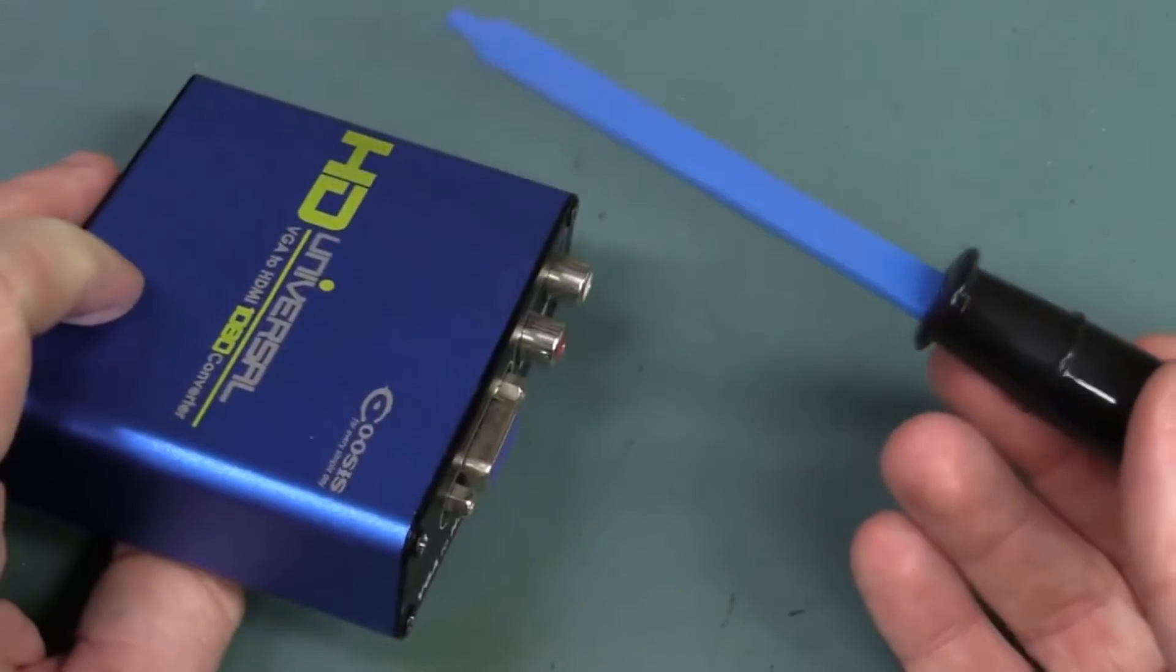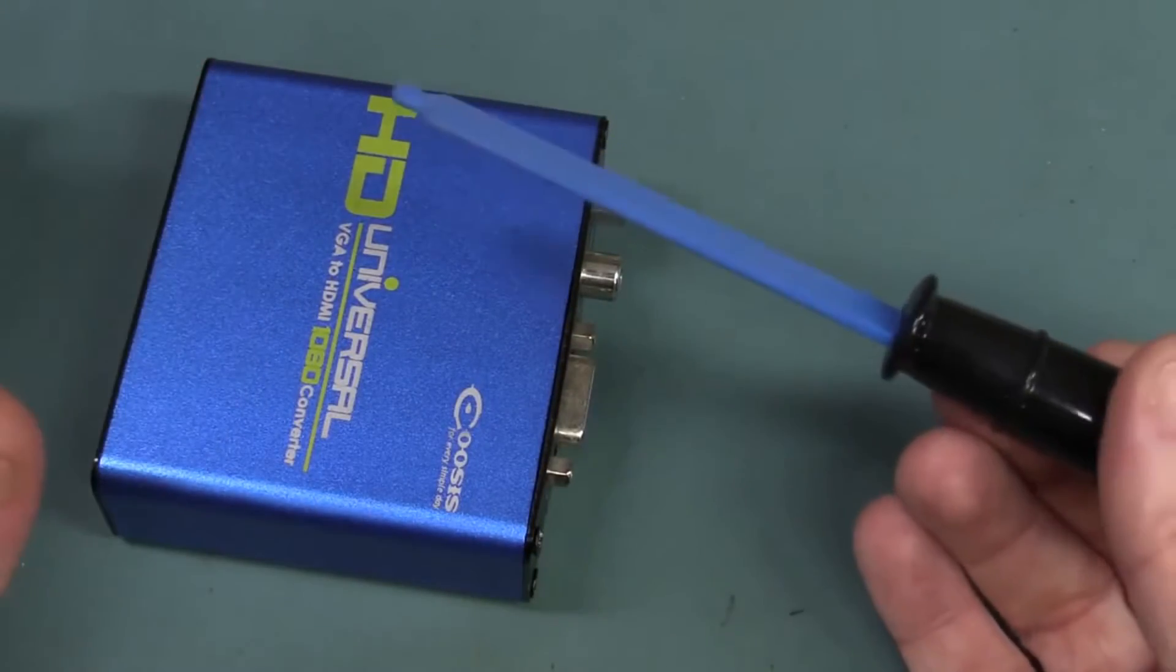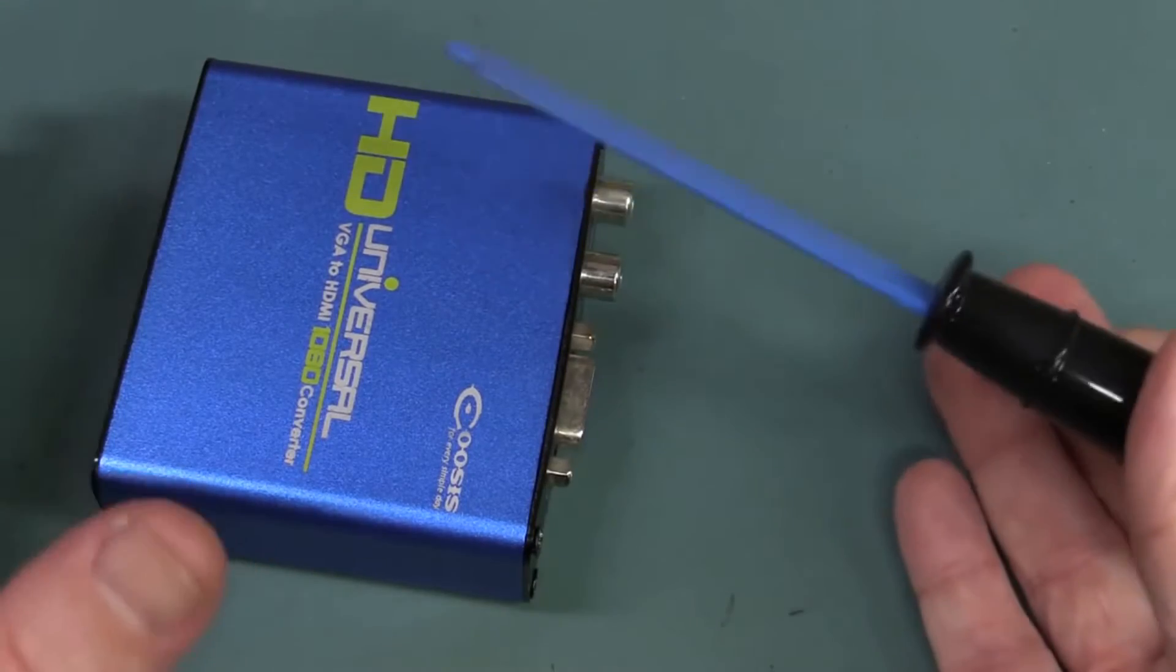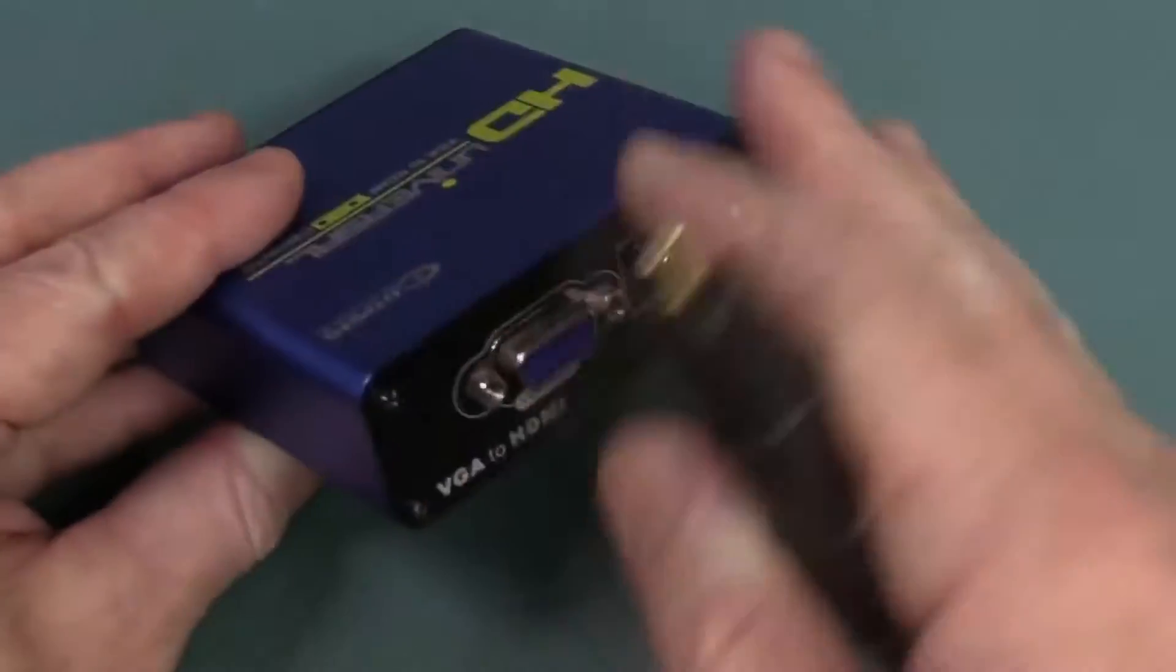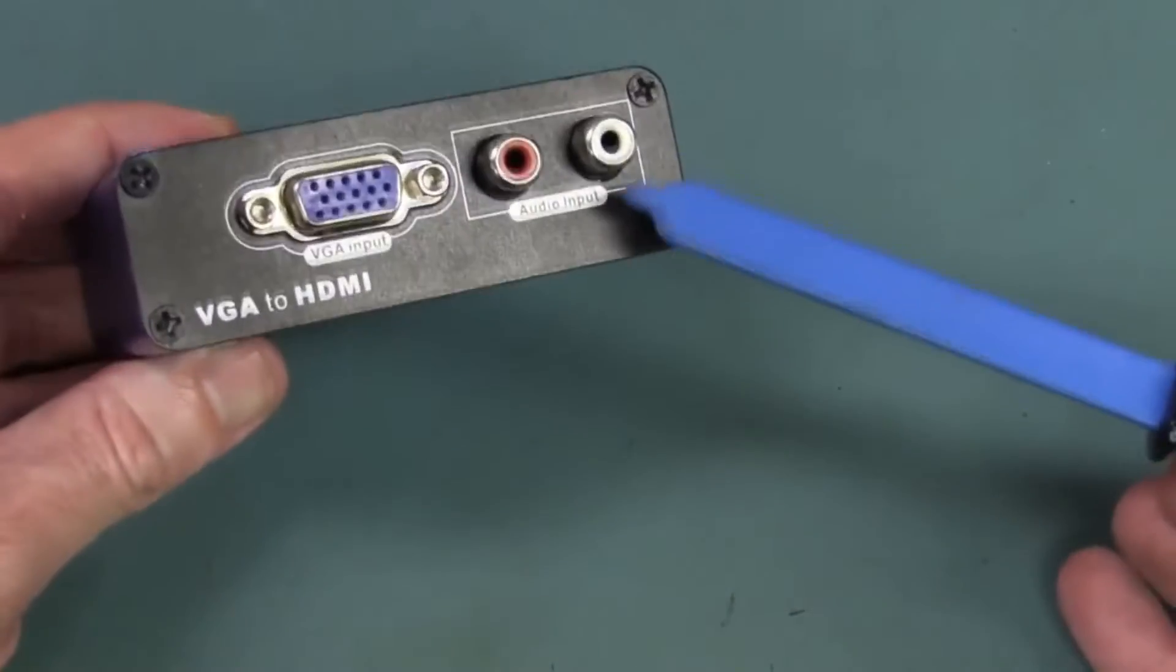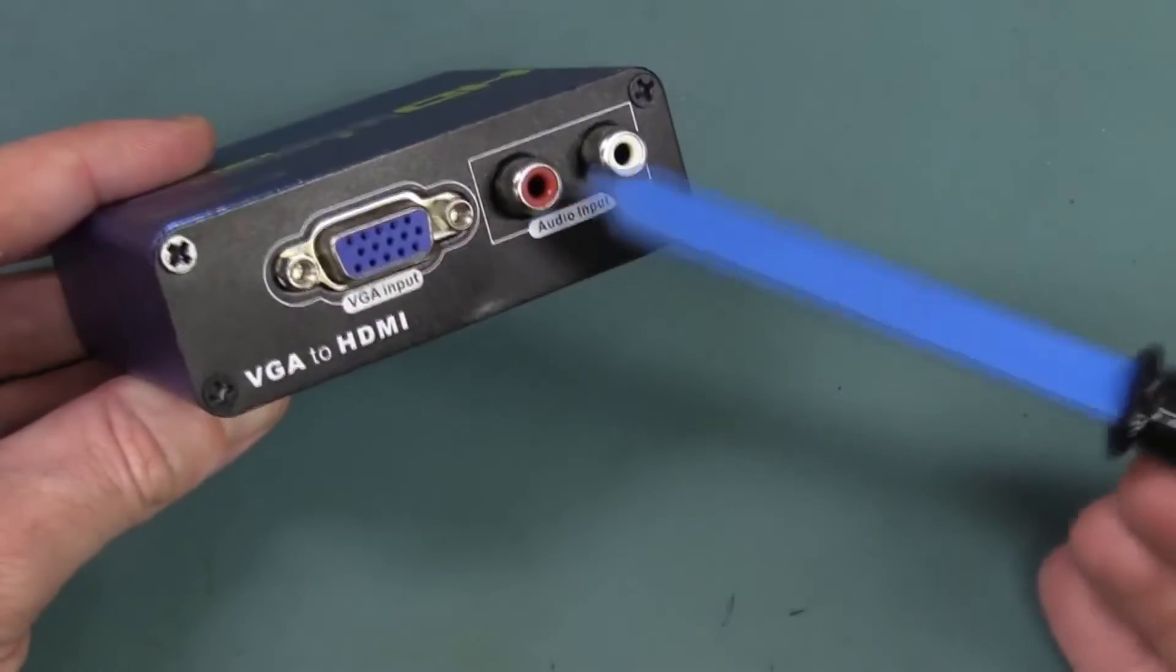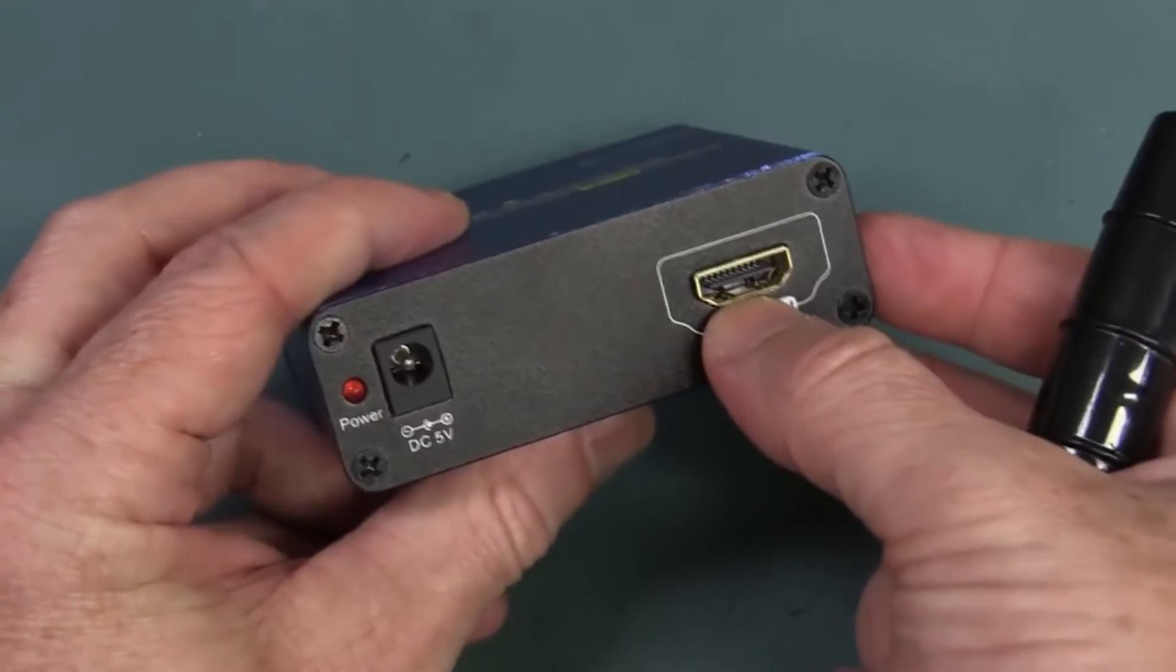But not only are they useful for just bare PCBs like that to check traces and components and all sorts of aspects to your PCB design, they can be used on final enclosures like this. So you can actually go around and find that we've got some leakage around these RCA ports here, or around our HDMI for example.